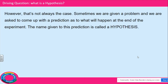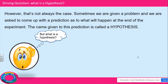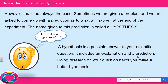However, that's not always the case. Sometimes we're given a problem and we are asked to come up with a prediction as to what will happen at the end of the experiment. The name given to this prediction is called a hypothesis. A hypothesis is a possible answer to your scientific question. It includes an explanation and a prediction. Doing research on your question helps you make a better hypothesis.